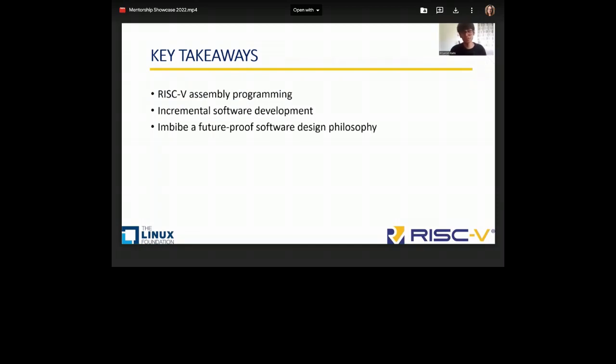We learned about incremental software development. You cannot start supporting all the complexity from the beginning. You have to start basic and then incrementally build on the complexity. We learned about adopting a future proof software design philosophy. This is particularly important in the RISC-V software ecosystem because RISC-V is constantly evolving. We got introduced to fascinating RISC-V open source initiatives like the RISC-V GNU compiler toolchain.